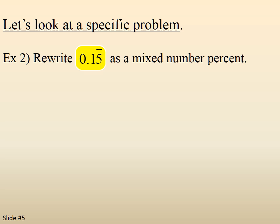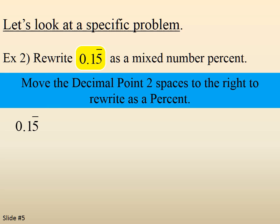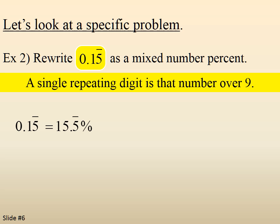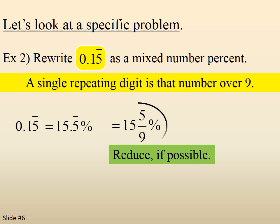Now let's look at zero point one five five five five five — so zero point one with five repeating. We follow the same step: move the decimal over two spaces. Zero point one five five five five five becomes fifteen point five repeating percent. A single digit repeating is that number over nine, so we have fifteen and five-ninths percent. In this case it doesn't reduce, so the answer is fifteen and five-ninths percent.